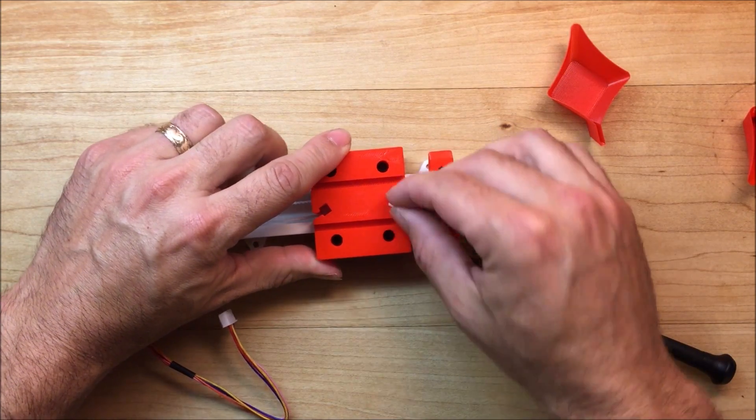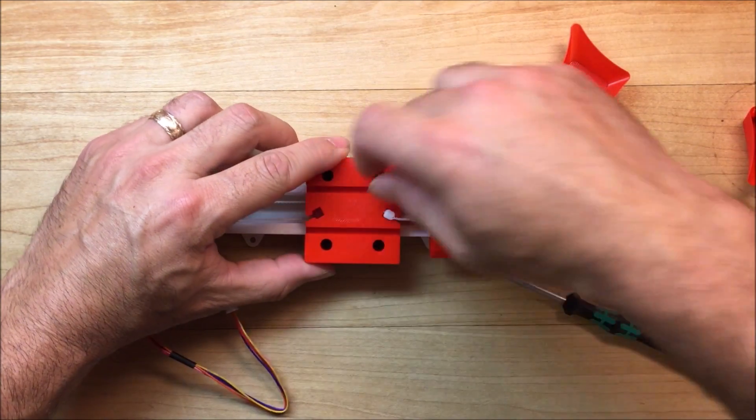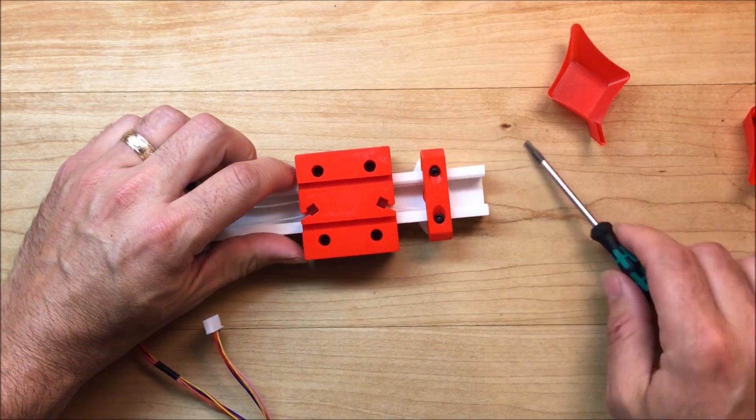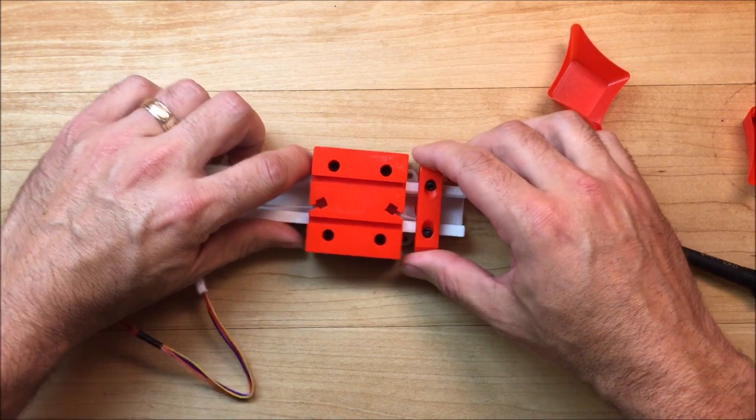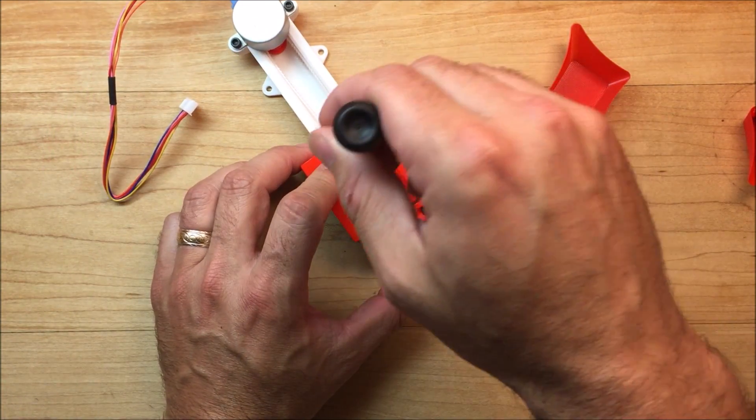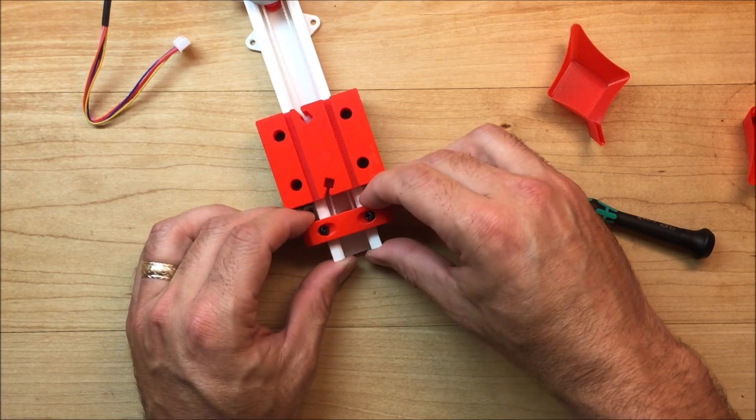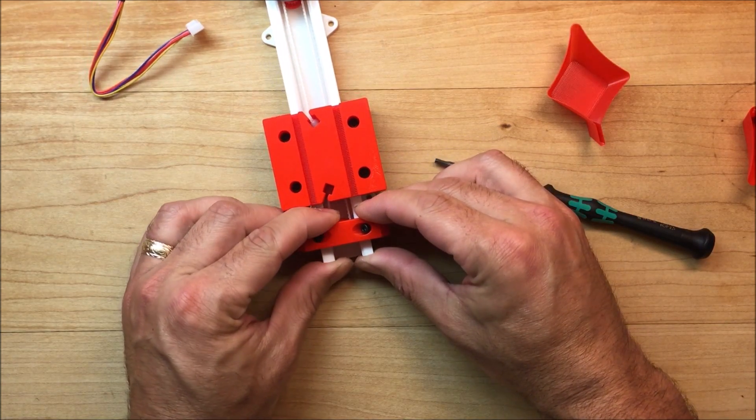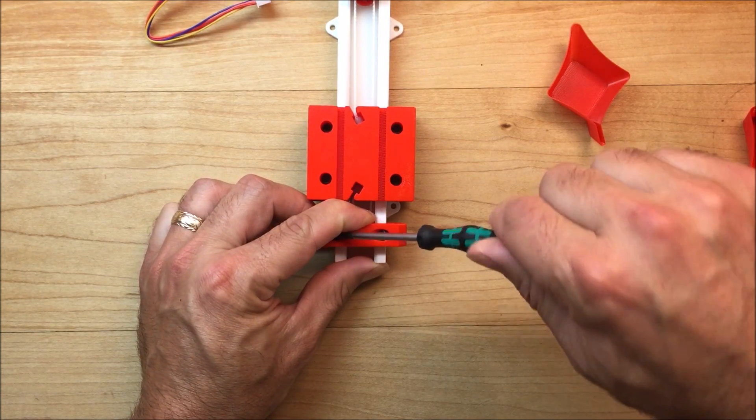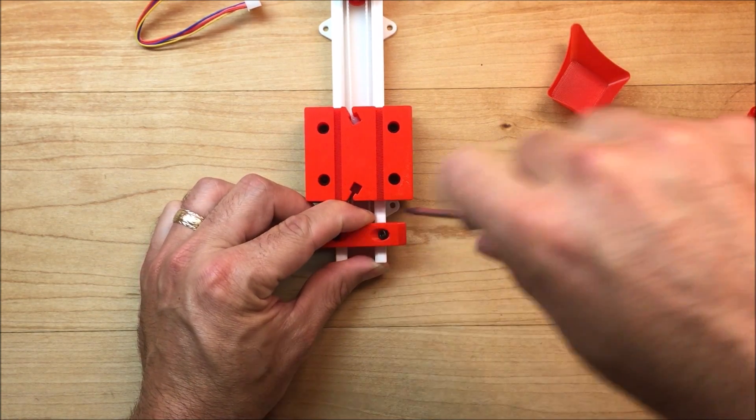And then install the timing belt. Make sure these are pushed down all the way. Put a little tension on it and tighten the clamp.